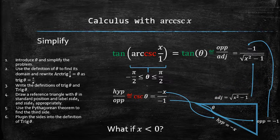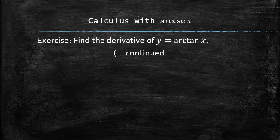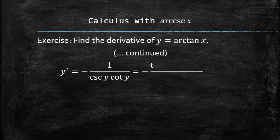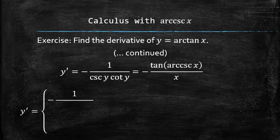If x is negative, then we make the hypotenuse positive by factoring out the negative sign and drawing the reference triangle in the fourth quadrant. After simplifying the trigonometric expression, we now have two formulas, one for positive x and one for negative x.